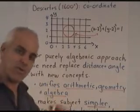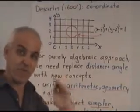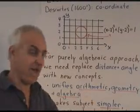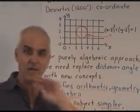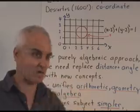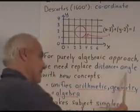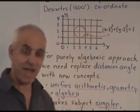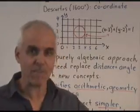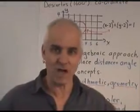So our approach is to stick with Descartes' reformulation of Euclidean geometry and insist that everything be done completely 100% algebraically. So we're going to replace distance and angle with new concepts. And we're going to restate all of trigonometry. We're going to reformulate all of geometry.